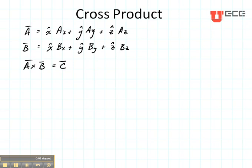Now let's talk about the cross product. If we have an A and a B given as you can see here, A cross B is going to equal C.